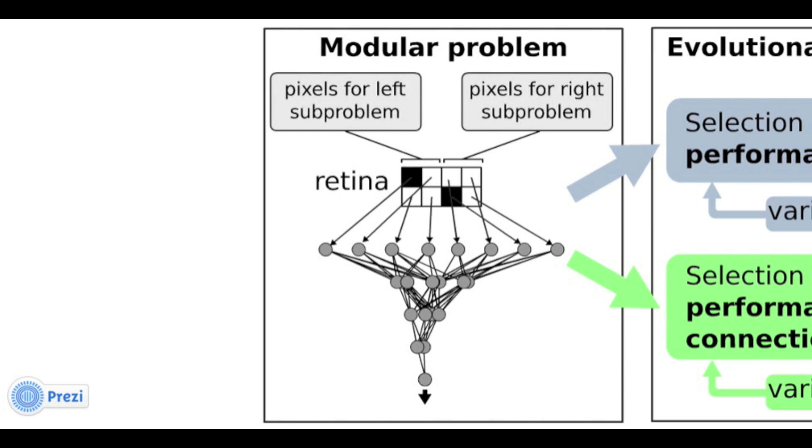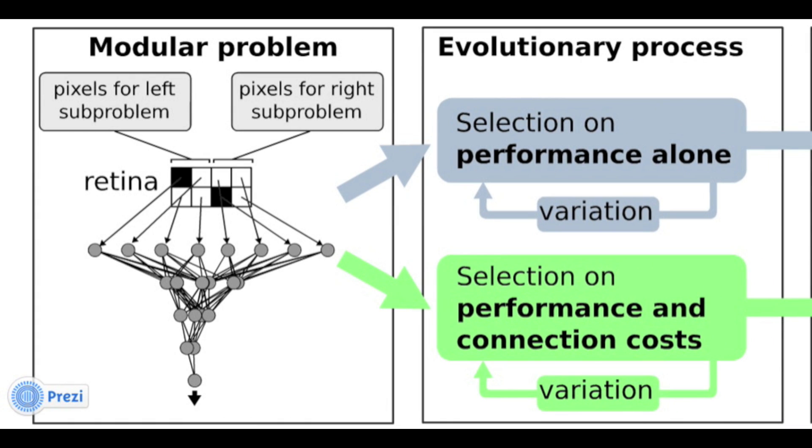In one experiment, selection was for performance alone, but in the other we added a cost for network connections.